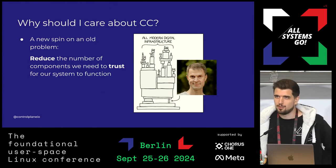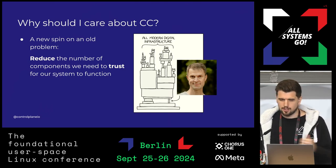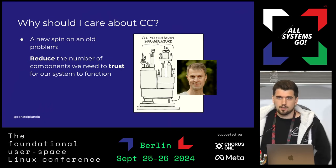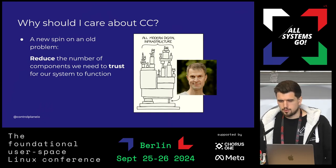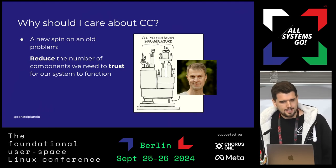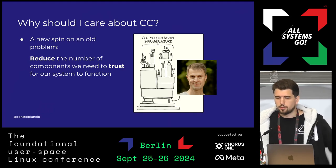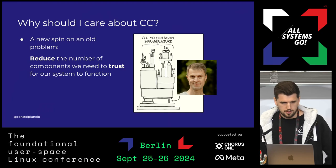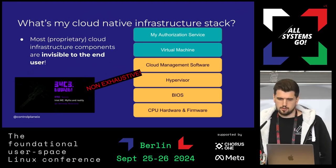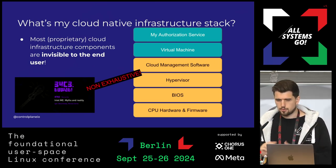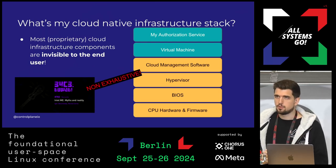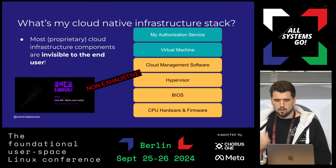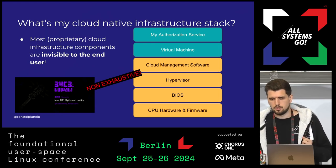Obligatory XKCD — because every talk has to have one. If you want to deploy anything on modern digital infrastructure, this is basically how your infrastructure stack looks: there are so many components, and the number is only ever increasing. This comic alludes to the fact that some components are more critical than others — basically the whole internet is built on curl. We want to reduce the total number of components that have a direct effect on the stability and security of our system.